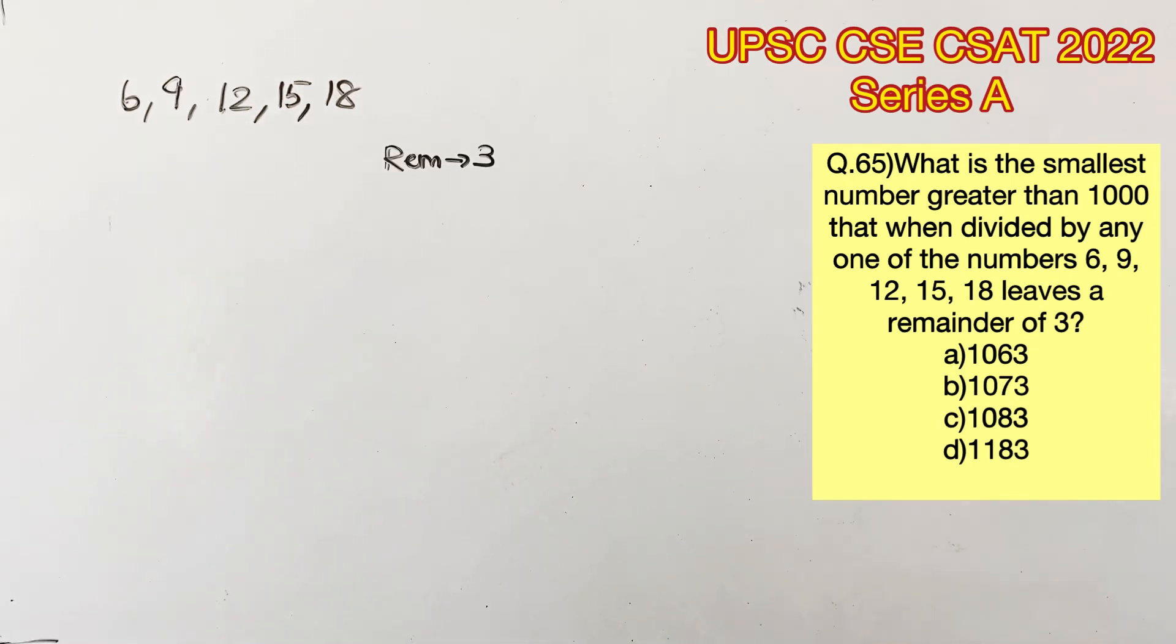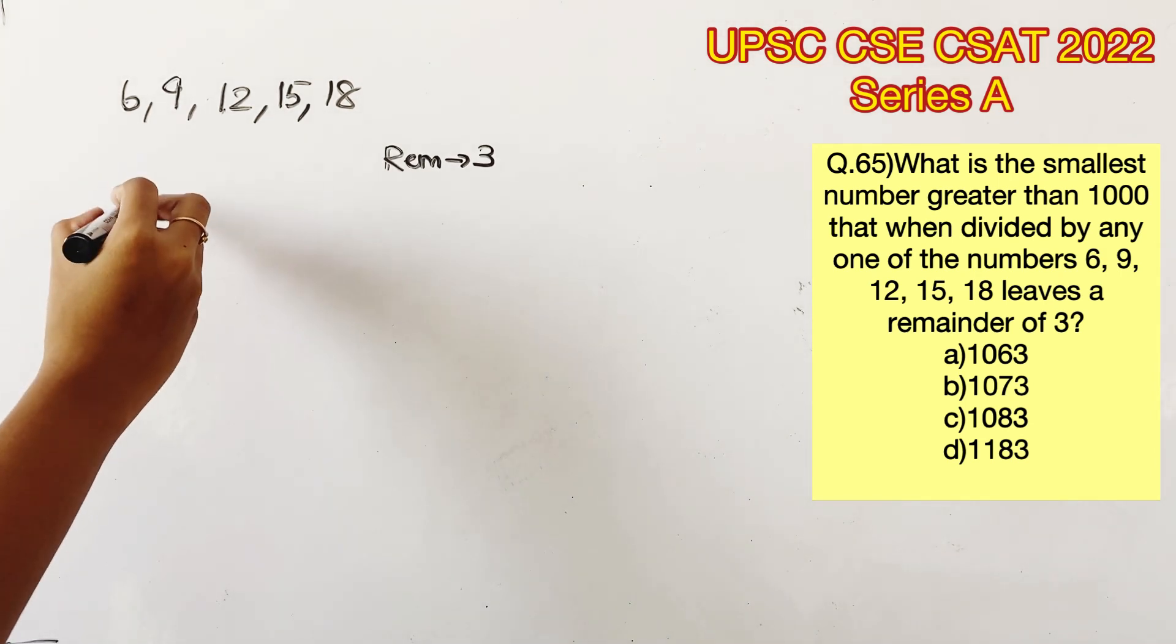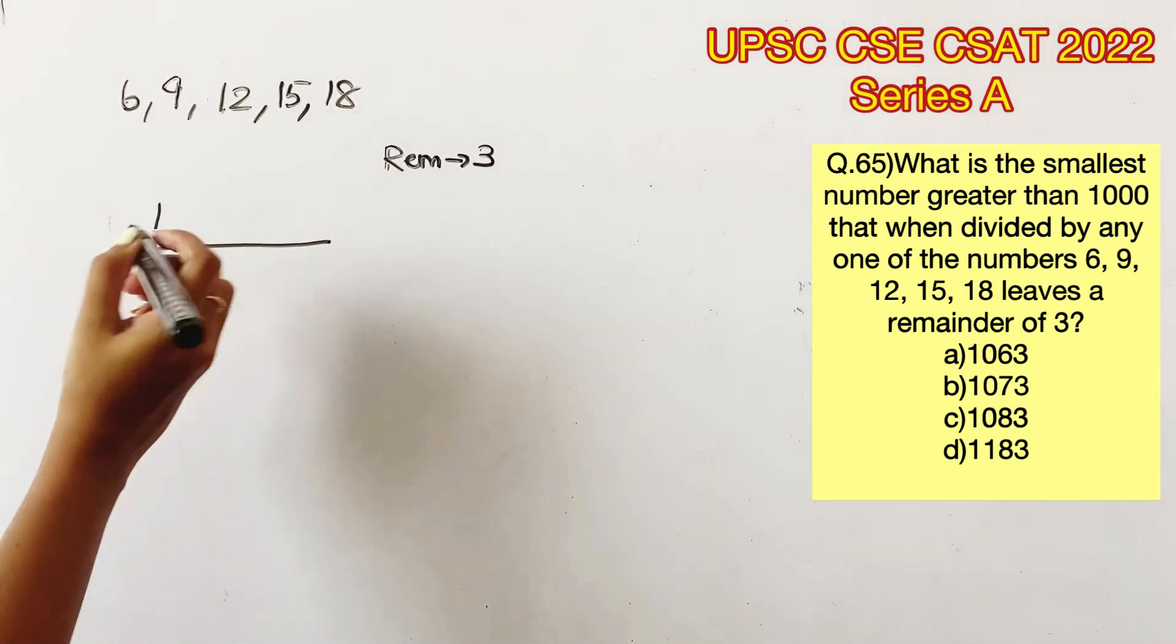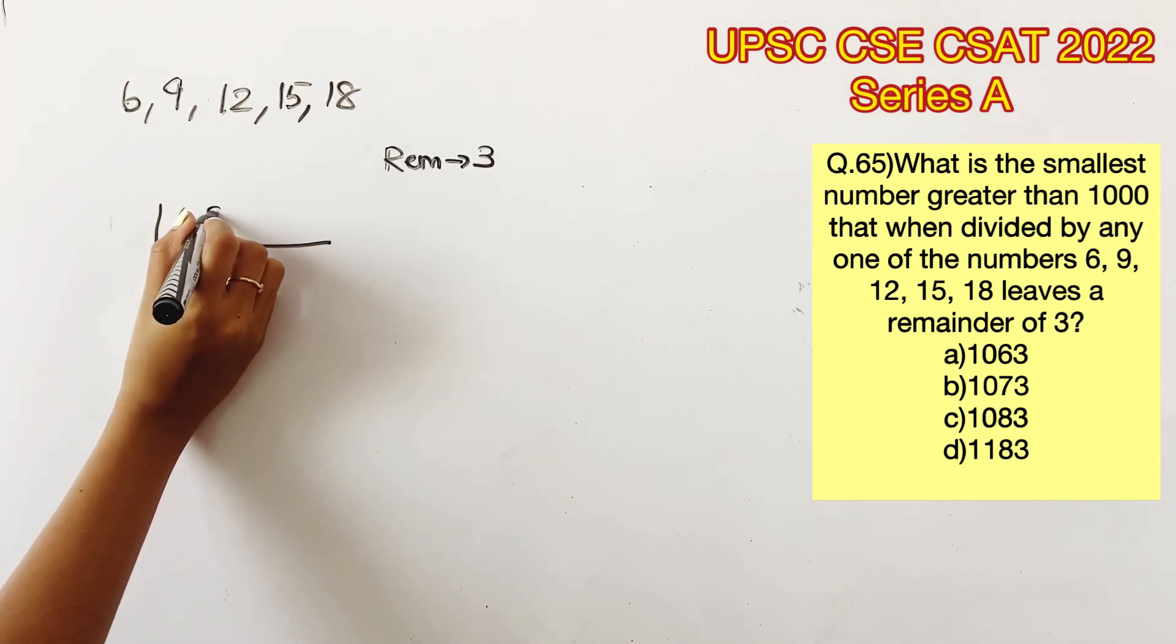To arrive at this answer, we're going to find the least possible four-digit number which is completely divisible by all these given numbers. We know that to find the least common multiple, we need to take the LCM.